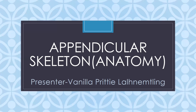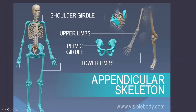Today we will be discussing about the appendicular skeleton. But before starting, can you tell me how many bones are in the axial skeleton? 80. Correct. So the total is 206 bones, and 206 minus 80 equals 126. So in the appendicular skeleton there are 126 bones.